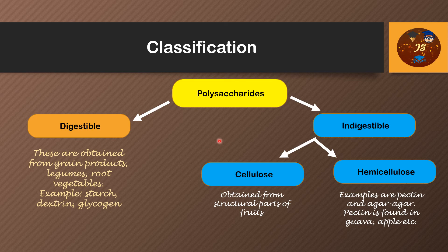Polysaccharides are further subdivided into digestible polysaccharides and indigestible polysaccharides. Digestible ones include starch, dextrin, and glycogen. Indigestible ones include cellulose and hemicellulose, which are parts of fruits, as well as pectin and agar-agar. Pectin is found in guava, apple, etc.